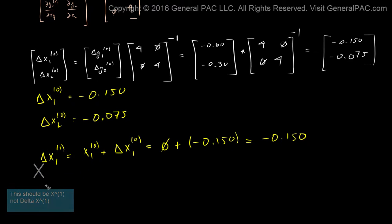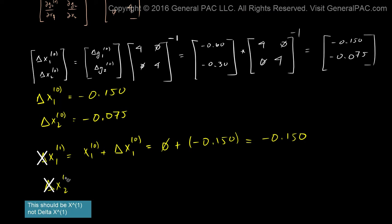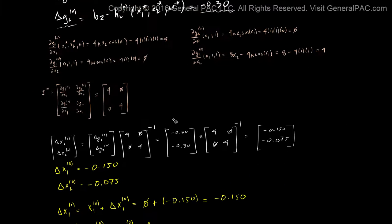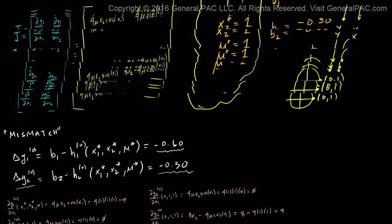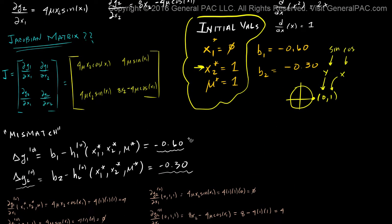And same thing with x2 for the next iteration is equal to x2 for the zeroth plus delta x2 of the zeroth. And that is equal to, well x2 for the zeroth, we said that that was equal to 1, if you remember correctly.